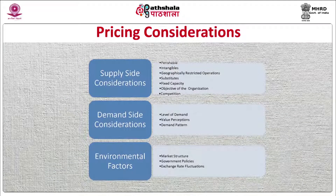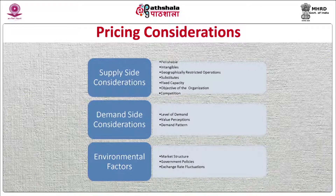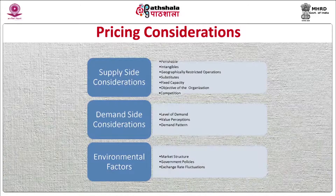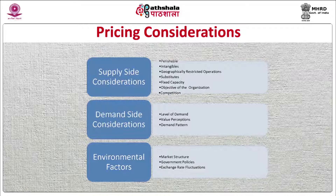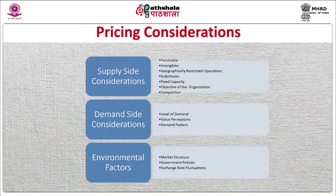Now let us start with pricing considerations. While deciding the price of a product or service, several considerations related with supply, demand and environment need to be taken care of. Let us start with supply side considerations. Supply of tourism services has characteristics of perishability, domination of intangibles, geographical restrictions and no gap between production and consumption. The first characteristic affecting pricing is perishability.